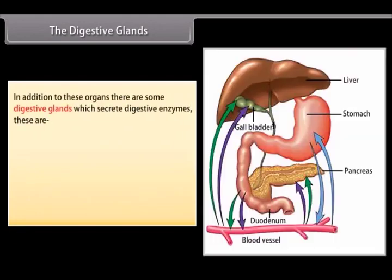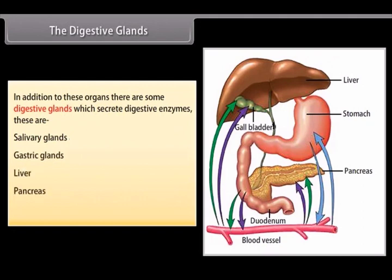In addition to these organs, there are some digestive glands which secrete digestive enzymes. These are salivary glands, gastric glands, liver, pancreas and intestinal glands.